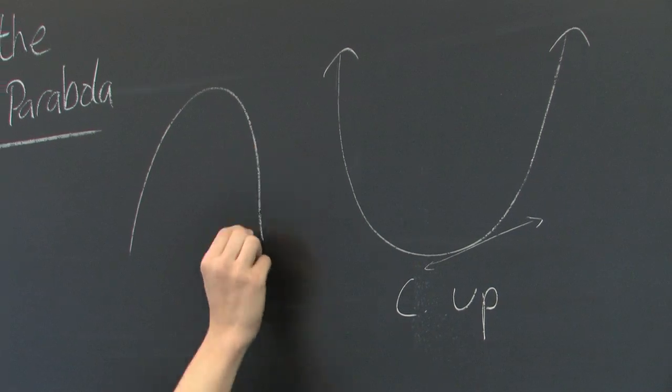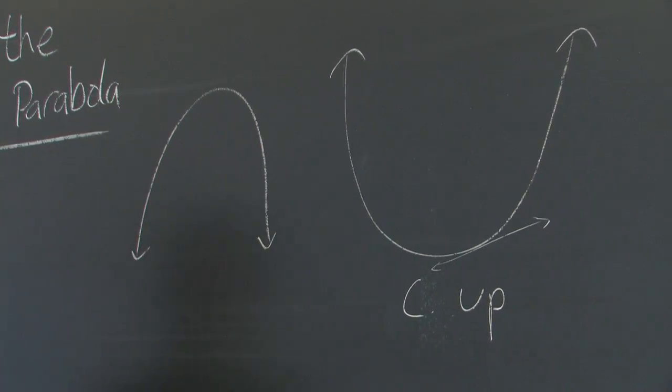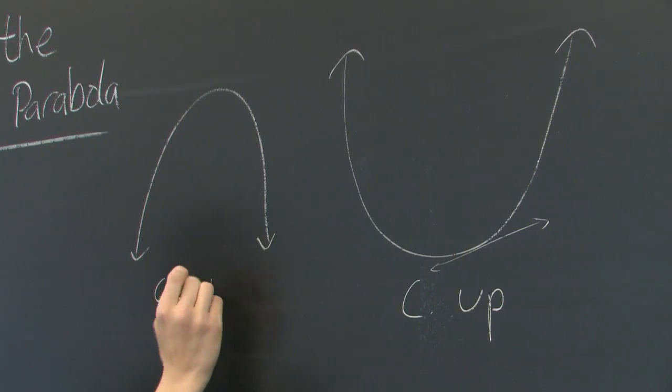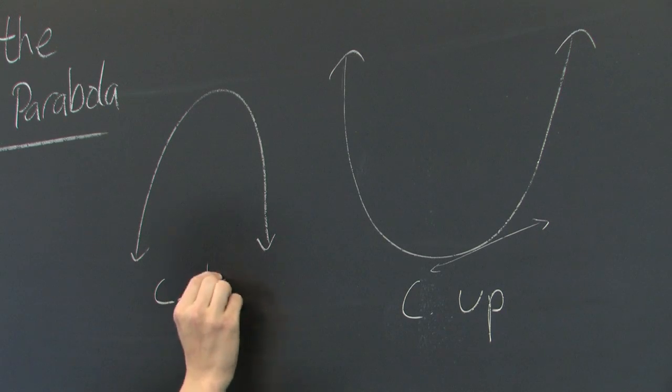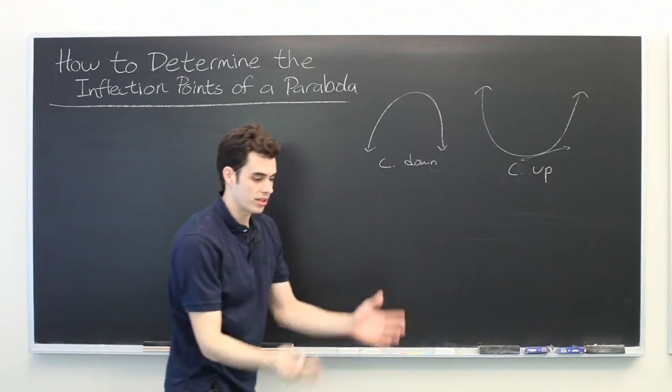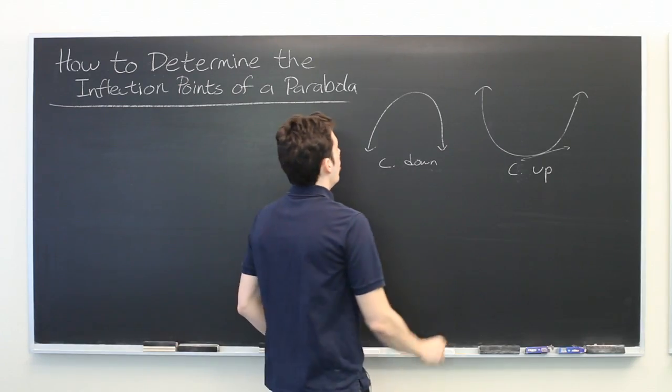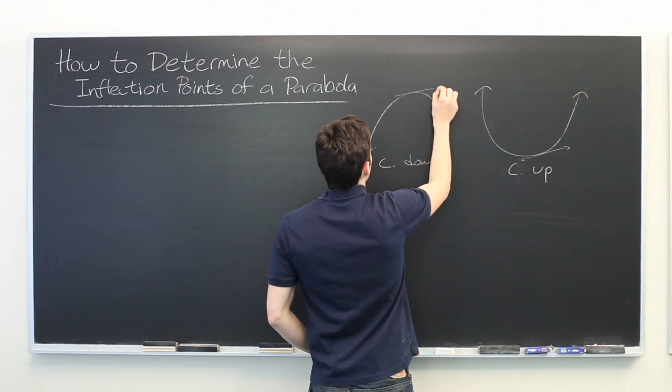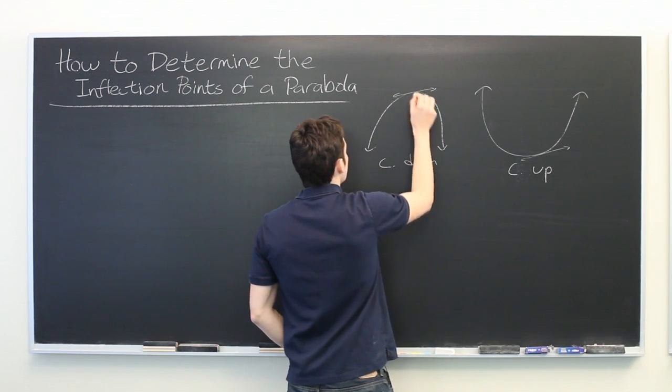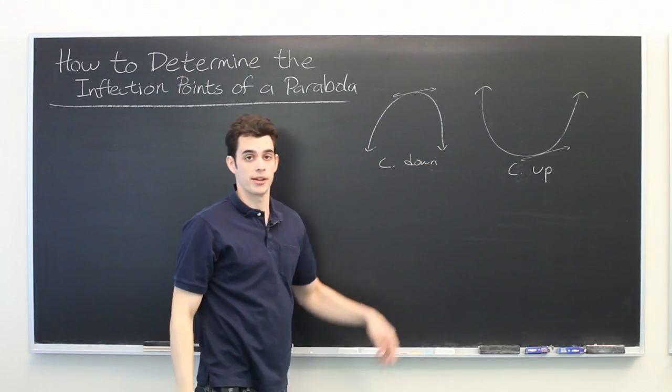Similarly, a graph is said to be concave down if it opens downwards, or if the tangent lines lie above the rest of the graph.